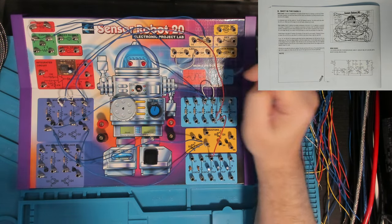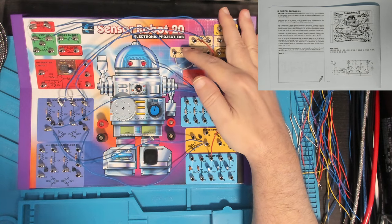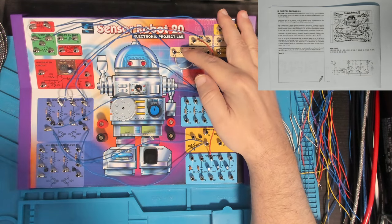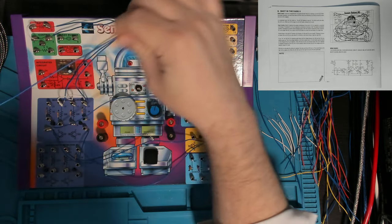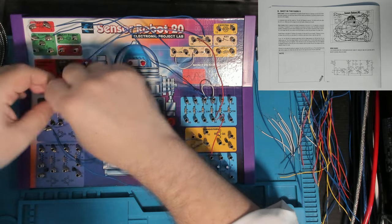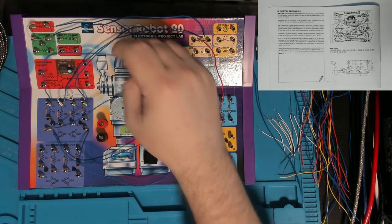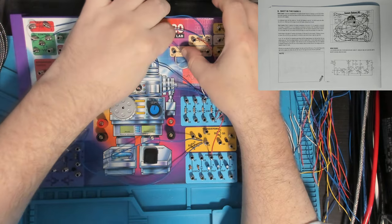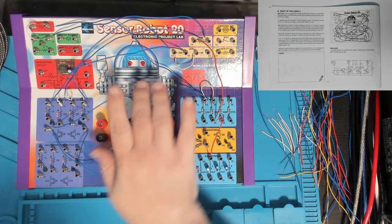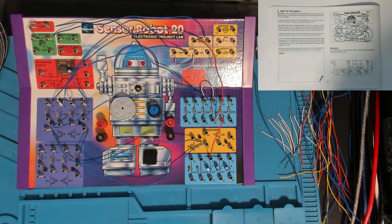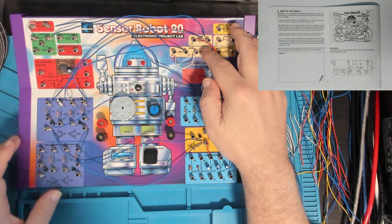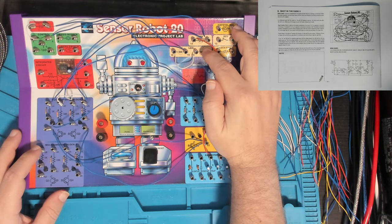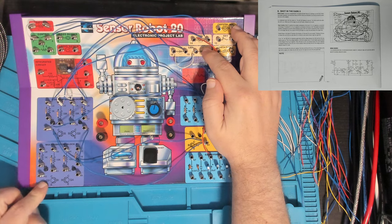And then we've got 19 to 29. 19 is the anode of our first LED. Now 29 is over here in our multivibrator. It's the 1K resistor connected to the collector of Q1. The collector of Q1 over to 19, our left LED. The LEDs are the lights on our robot face. So that was 19 to 29. And then we've got 21 to 39.